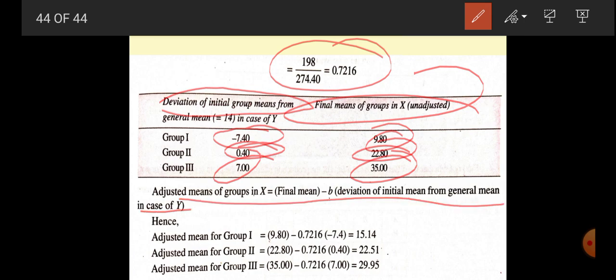Adjusted mean formula is this. If you find the adjusted mean for group 1, it is 15.14. Adjusted mean for group 2 is 22.51, and adjusted mean for group 3 is 29.95. This is all about the solution to find adjusted means for a particular group like group 1, group 2, and group 3.